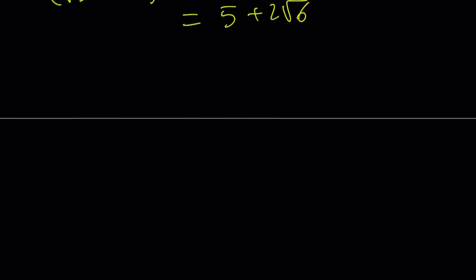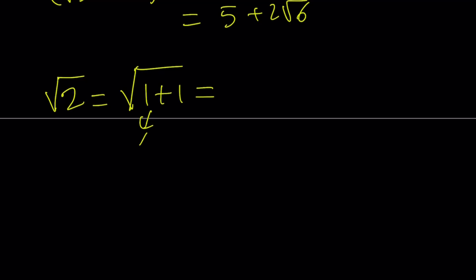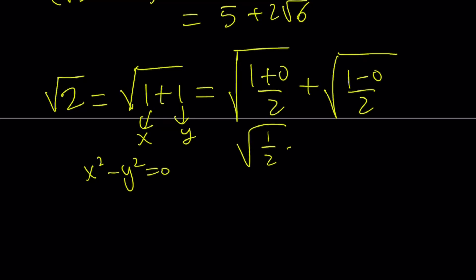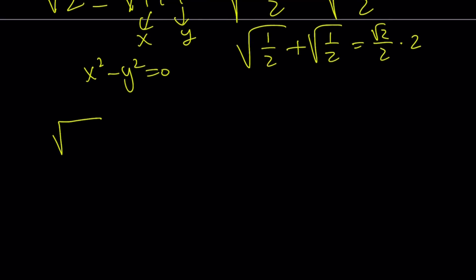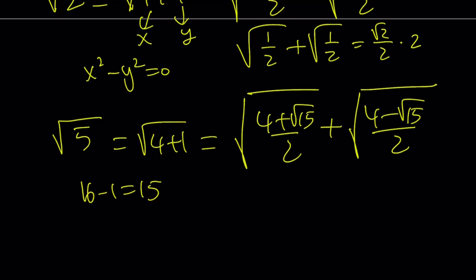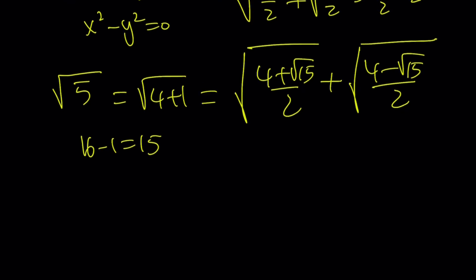This can be applied to many situations. For instance, take square root of 2 written as square root of 1 plus 1. Then x squared minus y squared is 0, and we get square root of 1/2 plus square root of 1/2, which is root 2 over 2 times 2, equal to root 2. Or take square root of 5 written as square root of 4 plus 1: evaluating 16 minus 1 gives 15, and this becomes the square root of (4 plus root 15) over 2 plus the square root of (4 minus root 15) over 2. Obviously this is nesting rather than denesting, but it shows the formula can be used in many different ways.